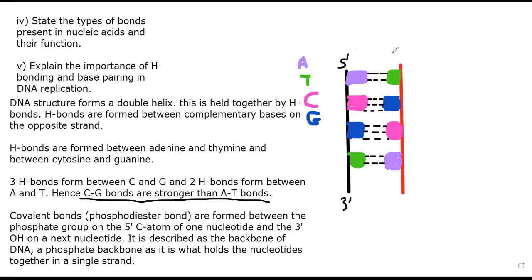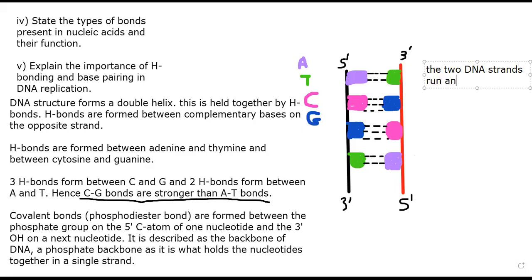The DNA strands run anti-parallel to each other. That simply means that if this strand runs five prime to three prime, the other strand must be doing the opposite — running three prime to five prime. We say that the two DNA strands run anti-parallel to each other.